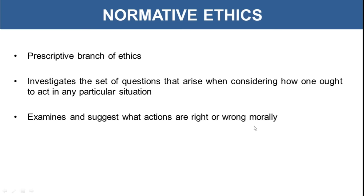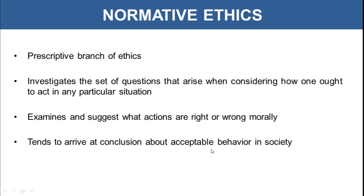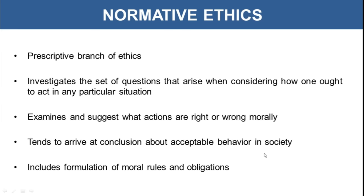Normative ethics examines and suggests what actions are morally right or wrong, and tends to arrive at conclusions about acceptable behavior in society. It would analyze the overall behavior in society and then tell you what is acceptable action and how you need to act. It includes formulation of moral rules and obligations. So whereas metaethics was only trying to analyze what makes you think in a particular situation, normative ethics is prescribing how you should act — what is right, what is wrong, what is acceptable behavior, and what is unacceptable.